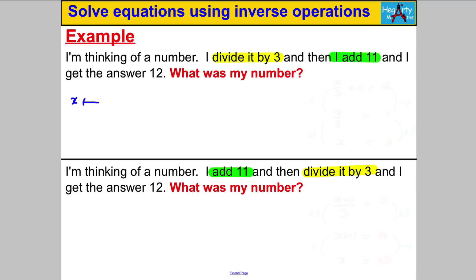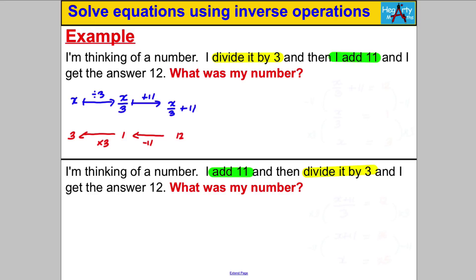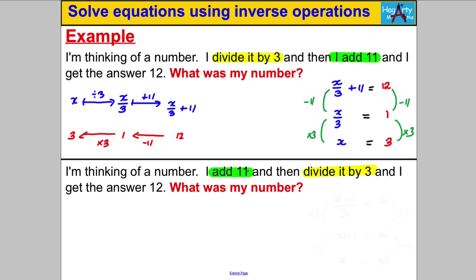Last examples — pause and have a go. I'm thinking of a number X — I divide by 3 to get X over 3, then add 11 to get X/3 + 11, and I know that equals 12. To find X: opposite of adding 11 is subtracting 11, so 12 − 11 = 1; opposite of dividing by 3 is multiplying by 3, so 1 × 3 = 3. X = 3. In algebra: X/3 + 11 = 12 → X/3 = 1 → X = 3.